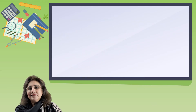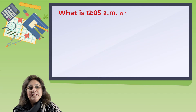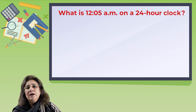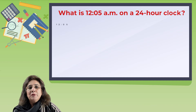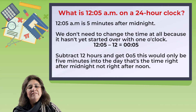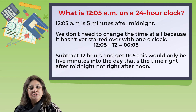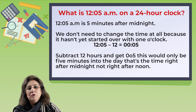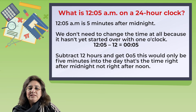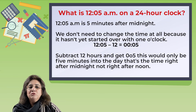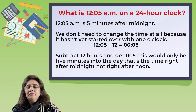Let's look at another example. What is 12:05 AM on a 24-hour clock? 12:05 AM is 5 minutes after midnight. We subtract 12 hours to get 00:05 — this would be only 5 minutes into the day. That's the time right after midnight, not right after noon.